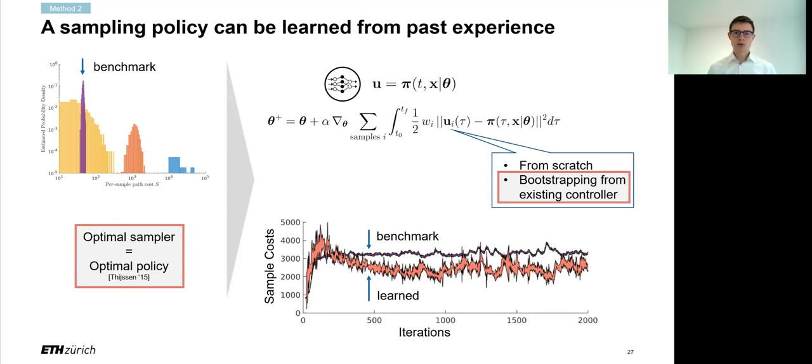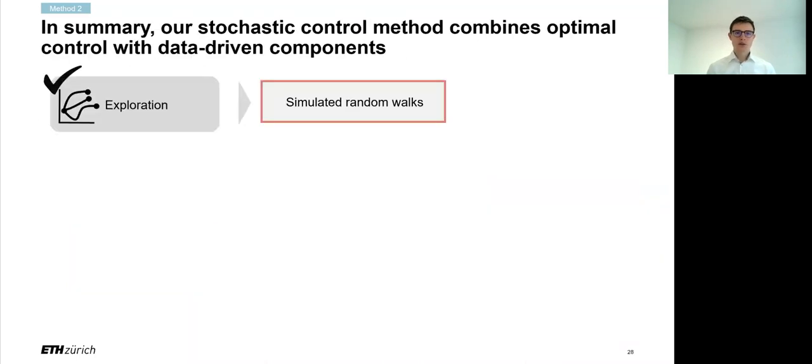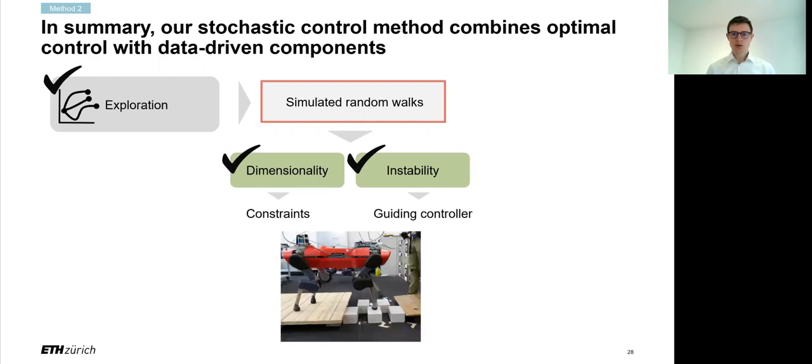So training from this shows that after a couple of hundred iterations, the learned policy manages to outperform the benchmark in terms of average sample performance, albeit at the slightly larger variance as the thickness of this line indicates. So altogether, we've solved the exploration problem through simulating random walks, which strike an automatic trade-off between robustness, safety and performance. We had two problems created by dimensionality and instability that led to a variance problem of the Monte Carlo estimation, and we addressed them through constraints and guiding controls, which allowed us to apply this in a real-time setting on discontinuous terrain. And if this guiding controller is not known, we can either learn it from scratch, or bootstrap ourselves from an existing control, which is much faster.